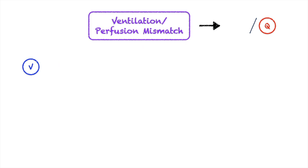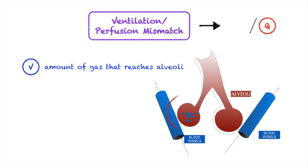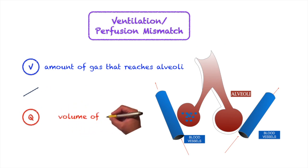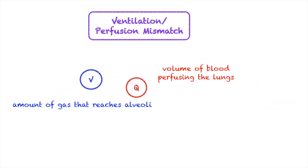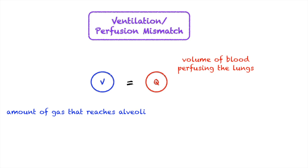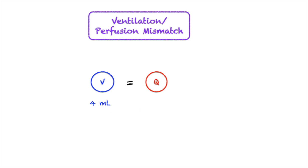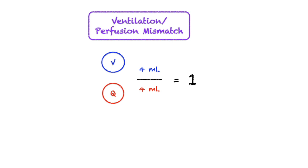V refers to ventilation — the amount of gas that reaches the alveoli. Q refers to perfusion — the amount of blood perfusing the lungs, essentially the blood vessels within the lungs. Theoretically, the amount of gas reaching the alveoli equals the volume of blood perfusing the lungs: for every 4 mL of air going into the alveoli, there is approximately 4 mL of blood ready to receive the oxygen. We can write this as a VQ ratio of 1.